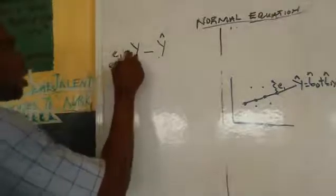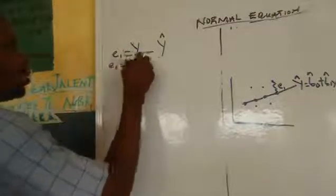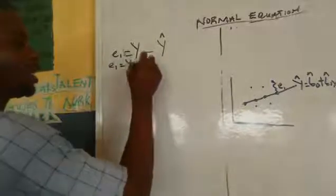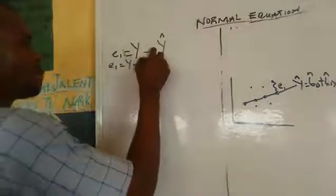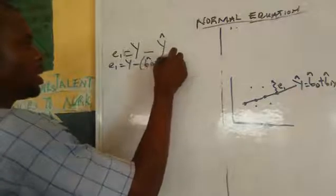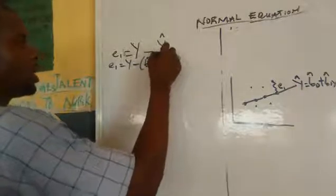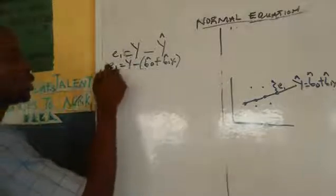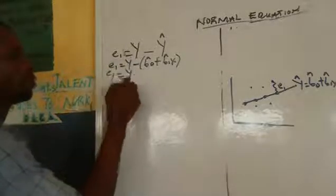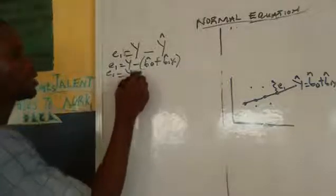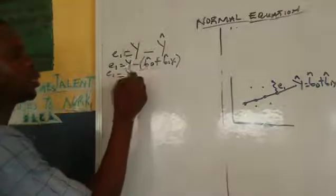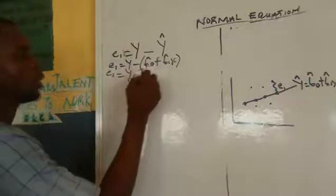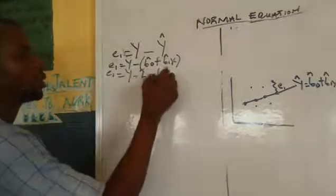This is our deviation: we write it as the observed value minus the estimated value in brackets, which gives us Y minus (B0 + B1X). Opening the brackets, minus times plus gives minus, so we get Y minus B0 minus B1X.